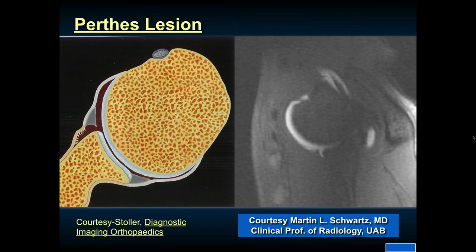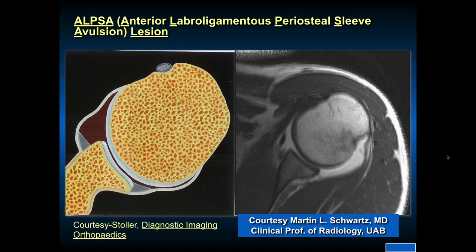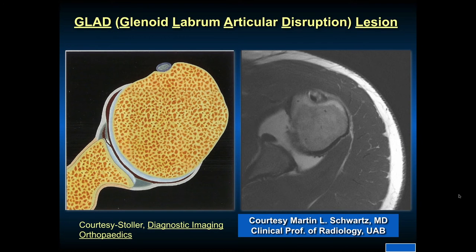A Perthes lesion involves more periosteal stripping well down over the neck of the glenoid, so the gadolinium goes further up on the neck of the glenoid. The ALPSA lesion — anterior labral ligamentous periosteal sleeve avulsion lesion — shows the labrum staying in place while there is a periosteal sleeve avulsion lesion. The GLAD lesion is a glenoid labrum articular disruption: there is a divot or pothole in the articular surface of the glenoid that came off with the labral tear, with a split in the labrum.